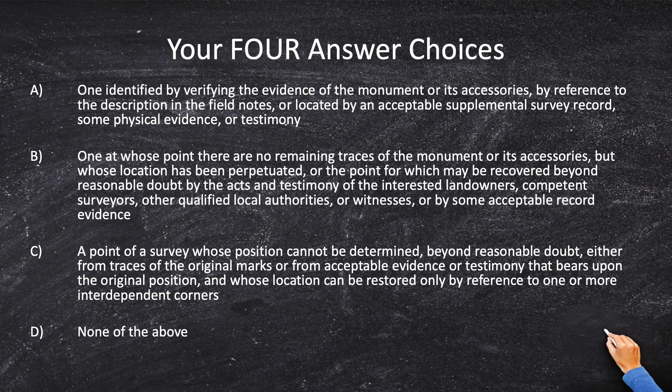Answer choice C: a point of a survey whose position cannot be determined beyond a reasonable doubt by either traces of the original mark or from acceptable evidence or testimony that bears upon the original position, and whose position can be restored only by reference to one or more interdependent corners. Answer choice D: none of the above.